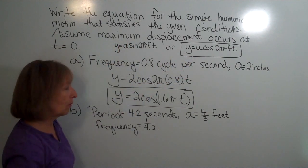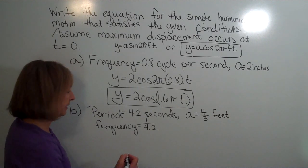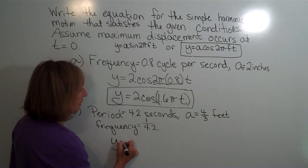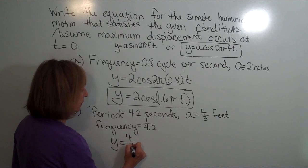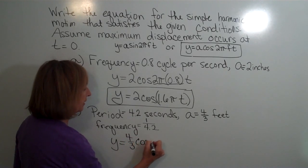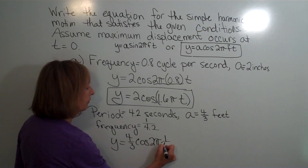I'm still using y equals a cosine 2πft. So I have y equals 4.3 times the cosine of 2π times the frequency 1 over 4.2 times t.